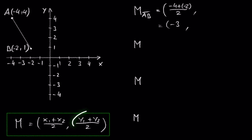And to get the y-coordinate of the midpoint, we have to divide the sum of the y-coordinates of point A and point B by 2. We get 4 plus 1 is 5 and 5 divided by 2 is 2.5.